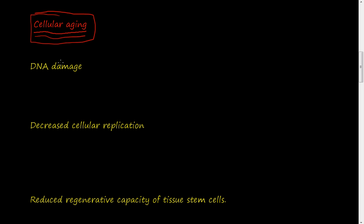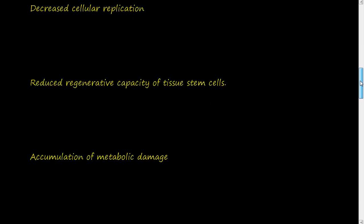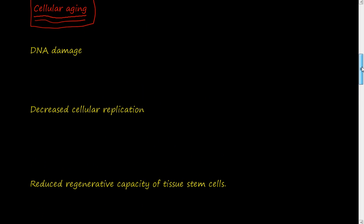There are four mechanisms by which cells age: DNA damage, decreased cellular replication, reduced regenerative capacity of tissue stem cells, and accumulation of metabolic damage. We are going to talk about each one and how they contribute to the aging of cells.